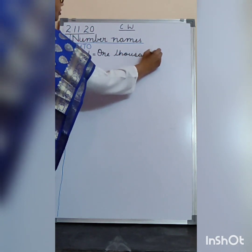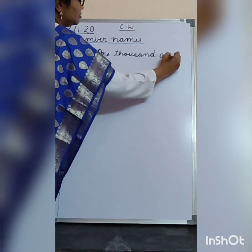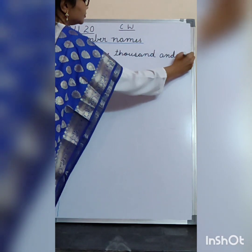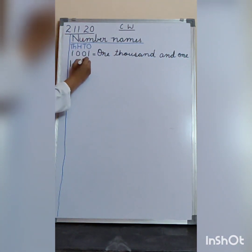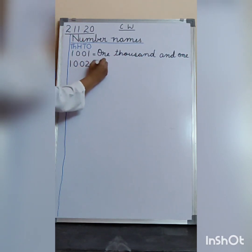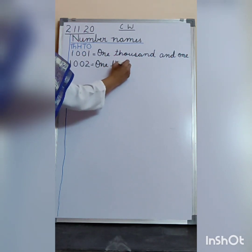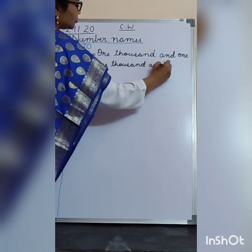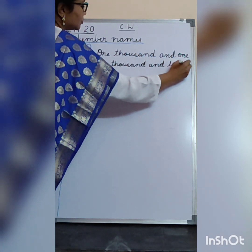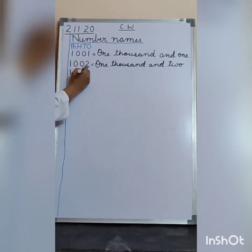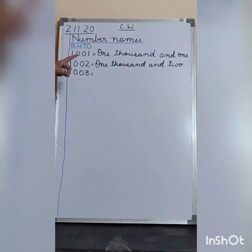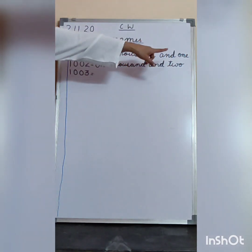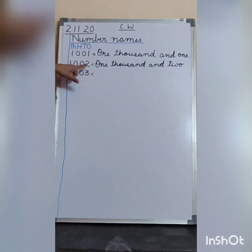Then you write 1000 and 1. Then you write 1000 and 2. Boys, as you say it, the same way you write. Say 1000 and 1 — when you are saying it, then you write it. Say and write. 1000 and 2.